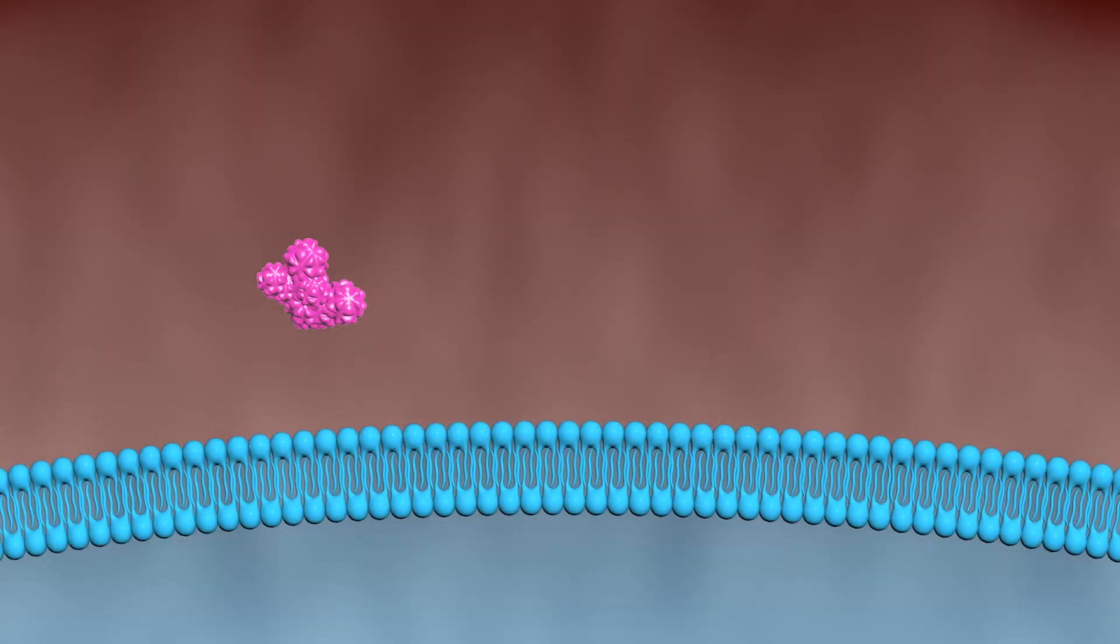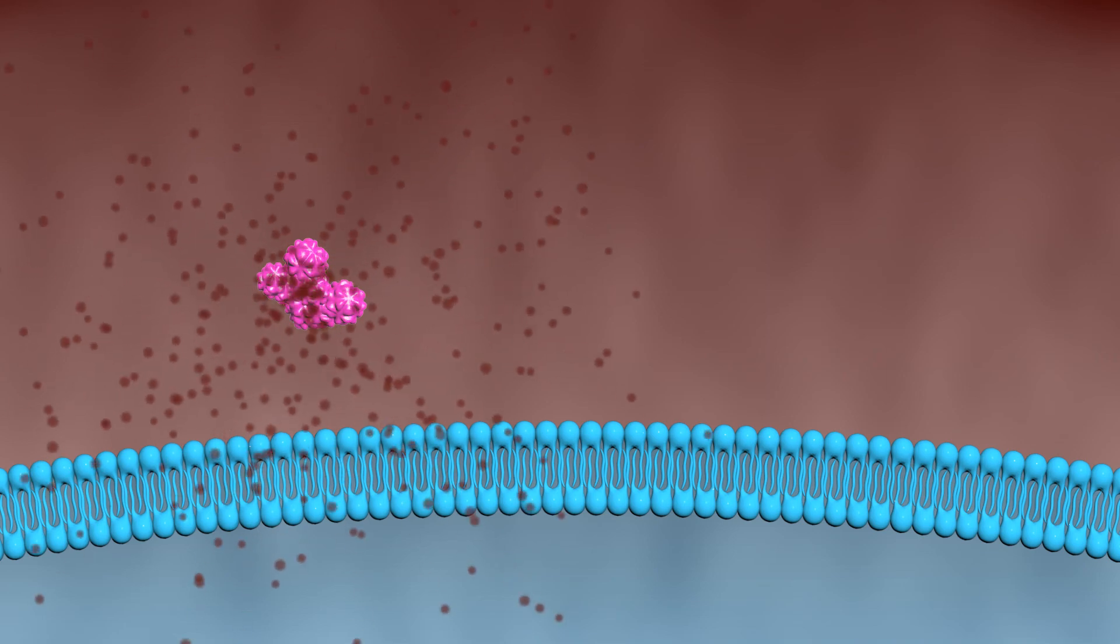The resistant gene on plasmid is transferred between bacteria by conjugation, where plasmid is transcribed and translated. The host bacteria will begin to produce inactivating enzymes.